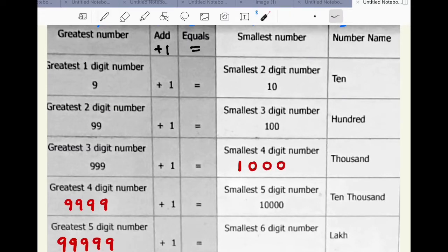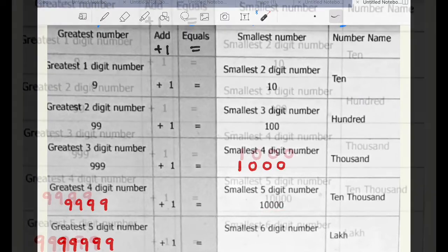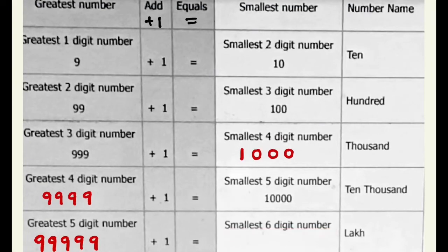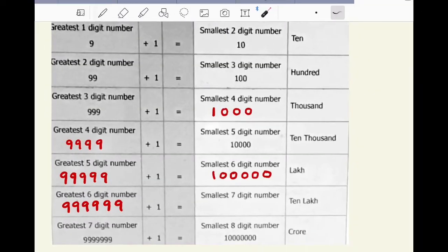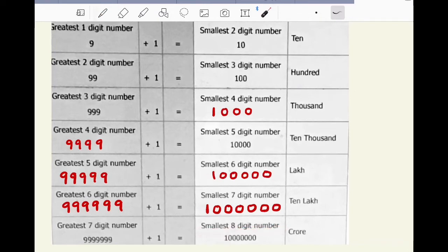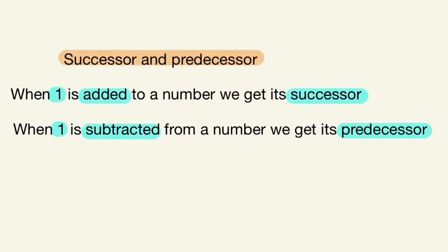The smallest five digit number is 1 followed by 4 zeros. The smallest six digit number is 1 followed by 5 zeros. So, the smallest seven digit number is 1 followed by 6 zeros. And the smallest eight digit number is 1 followed by 7 zeros.